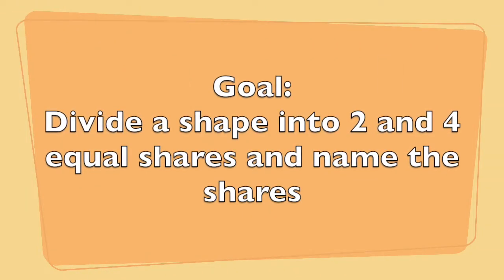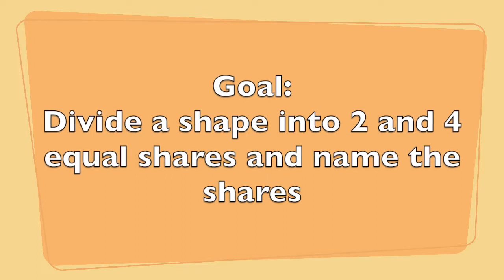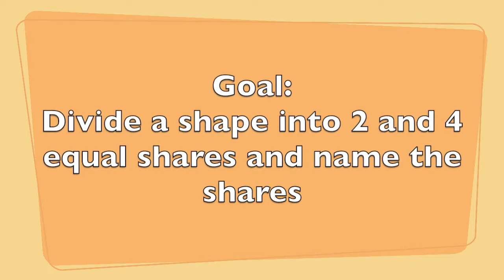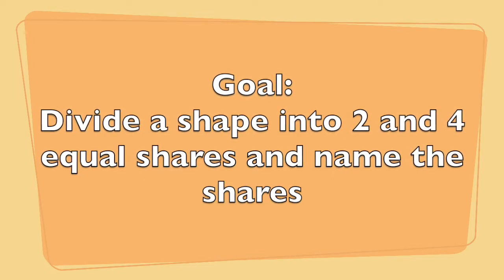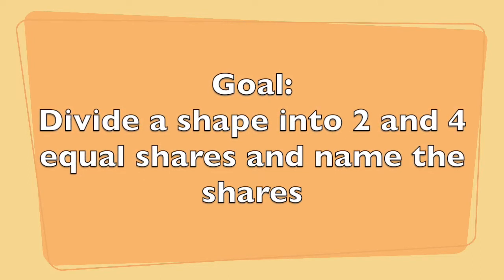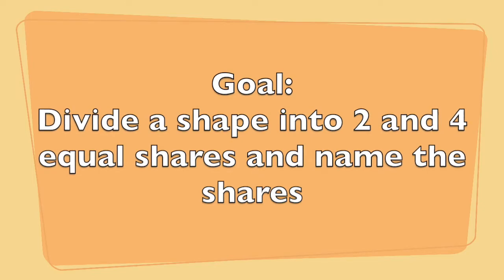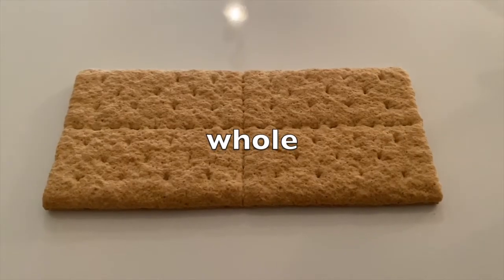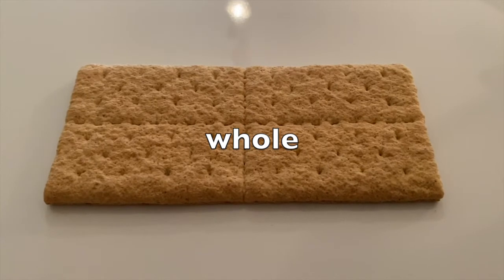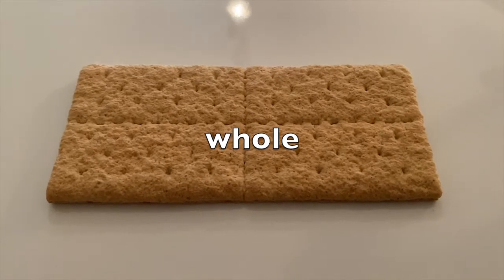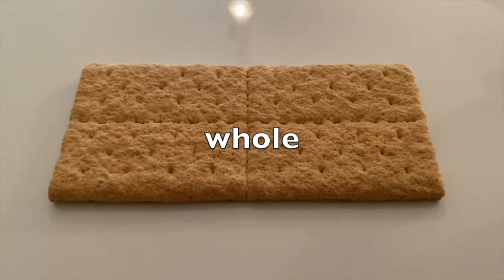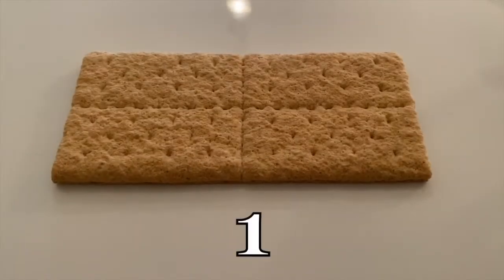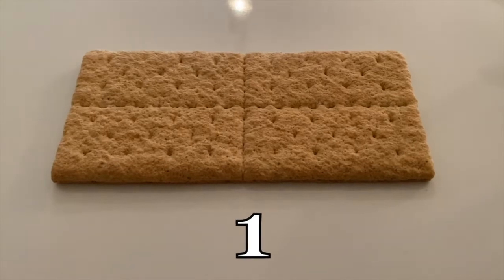Our learning goal is to divide a shape into two and four equal shares and name the shares. We start by looking at a whole graham cracker. It's a whole because it has not been broken into equal parts yet. The number that we use to represent a whole is the number one.